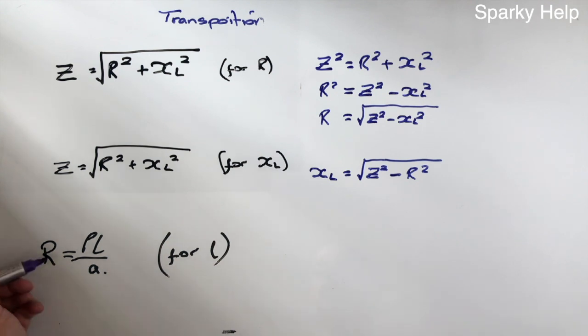This one down here, this is resistance. This is rho, which is the resistivity of a material. This is L, which is length, and A is the cross-sectional area of the cable. So this is finding the resistance of a conductor of a certain material, a certain length, and a certain cross-sectional area. It's just asking you to transpose it. To do this, what we need to do is get rid of the A. The A is divide, becomes a multiply. R times A is equal to rho L.